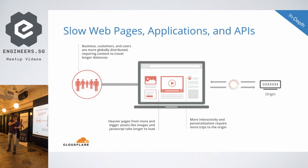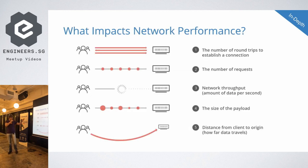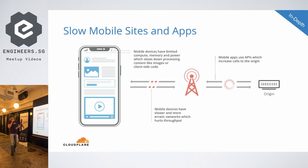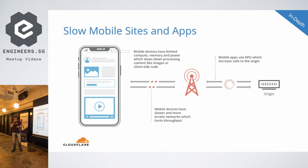This requires more interactivity and personalization, leading to more round trips back and forth. For mobile, devices have limited compute and memory, which is an additional challenge making apps slower. Mobile devices also connect through radio stations, adding latency. Mobile apps and APIs increase the calls to the origin, and specific applications like gaming and gambling are quite demanding.